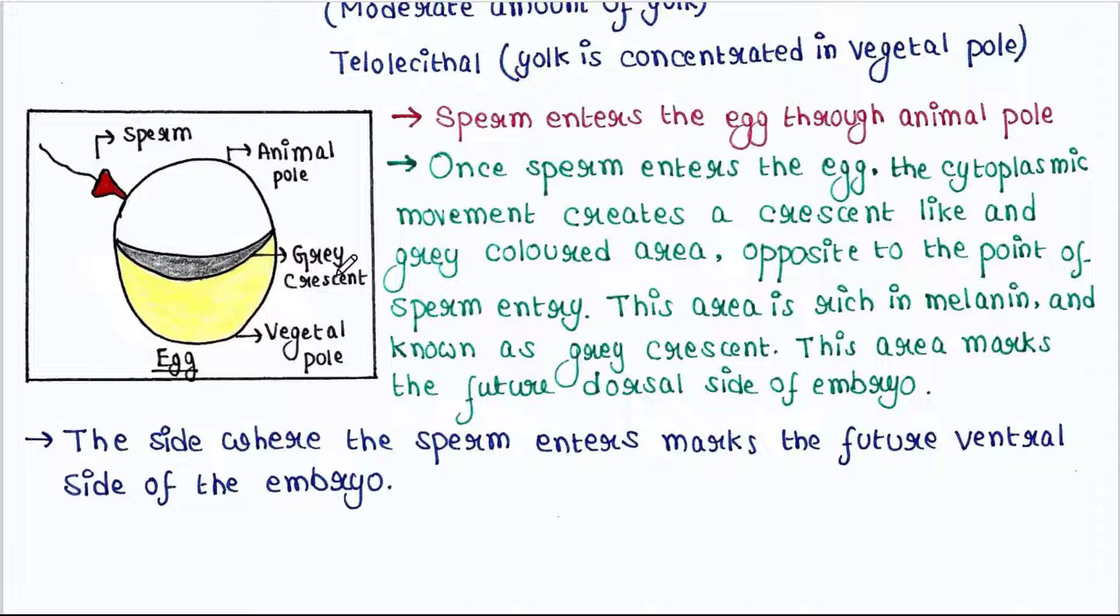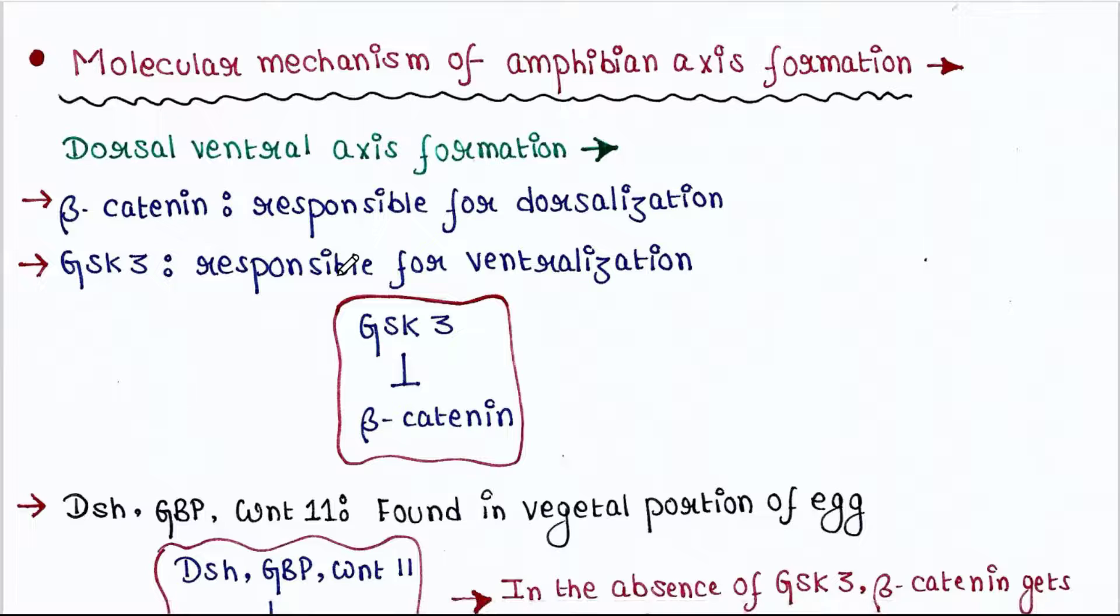We will see the molecular mechanism of amphibian axis formation. First, dorsal-ventral axis formation. Two proteins are important: beta-catenin and GSK3 protein. Beta-catenin is responsible for dorsalization and GSK3 is responsible for ventralization. GSK3 proteins block beta-catenin.